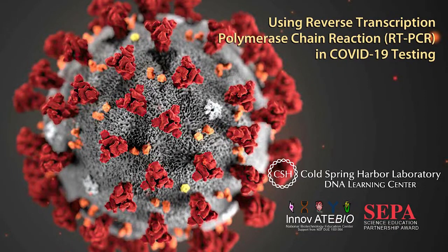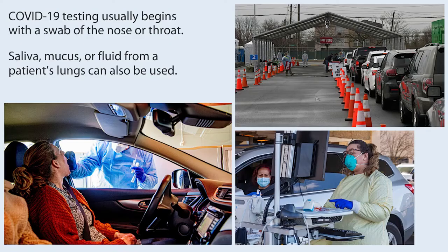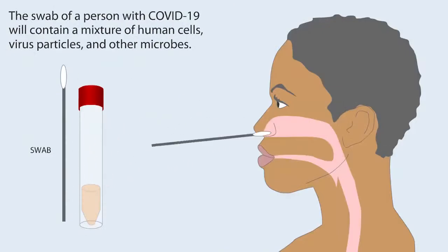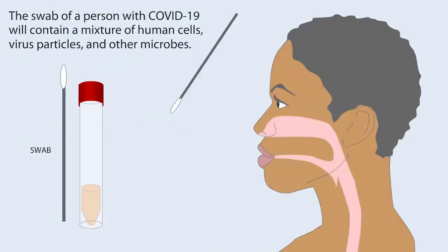Using reverse transcription polymerase chain reaction, RT-PCR, in COVID-19 testing. COVID-19 testing usually begins with a swab of the nose or throat. Saliva, mucus, or fluid from a patient's lungs can also be used. The swab of a person with COVID-19 will contain a mixture of human cells, virus particles, and other microbes.